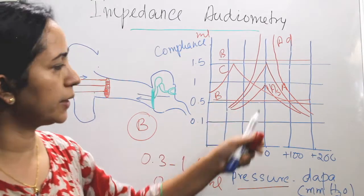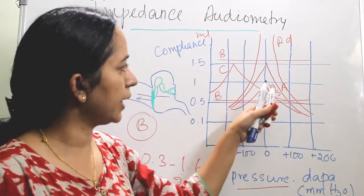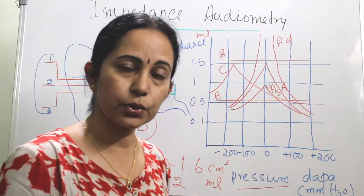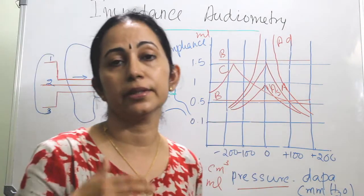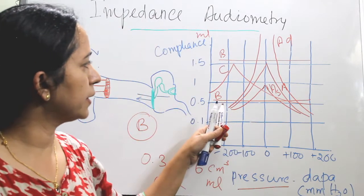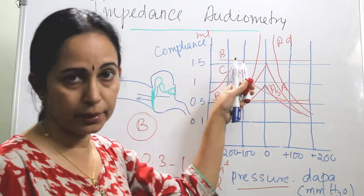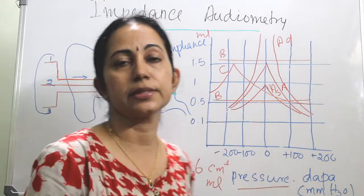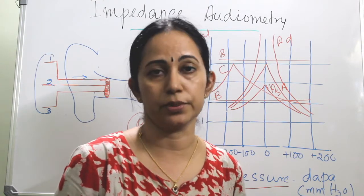To summarize the curve types: Type A is normal; AS has reduced compliance; AD has very high compliance with normal pressure; B curve — low B is seen in secretory otitis media, high B in perforated tympanic membrane or grommet in situ; and C curve is a negative-peaking curve seen in Eustachian tube dysfunction.